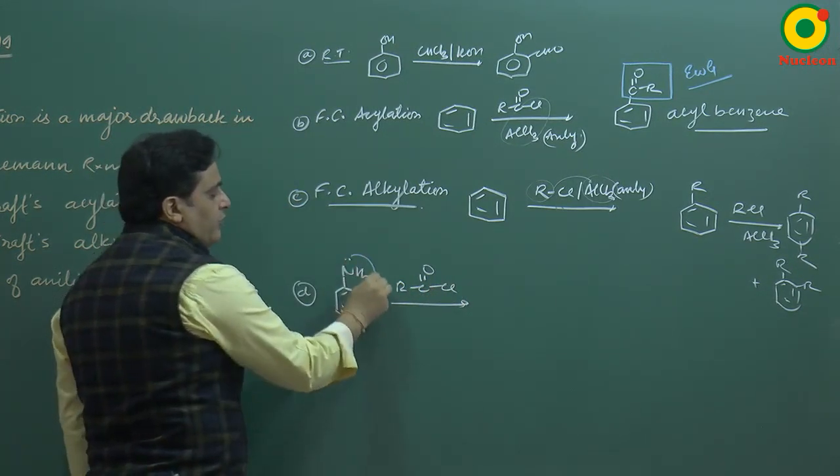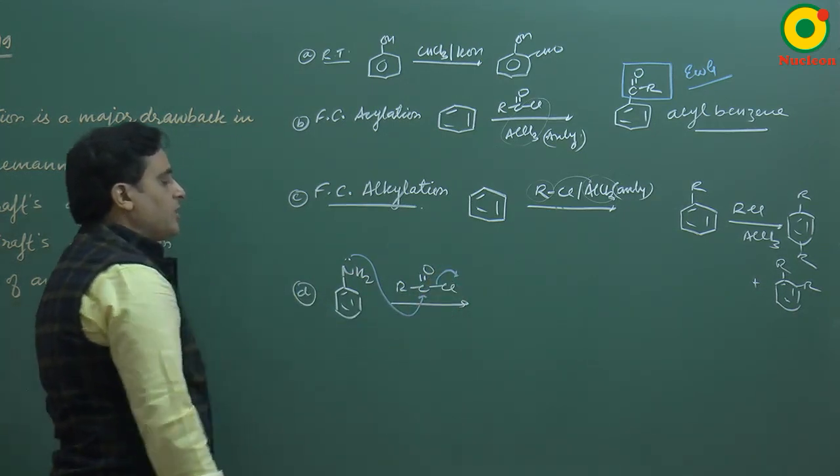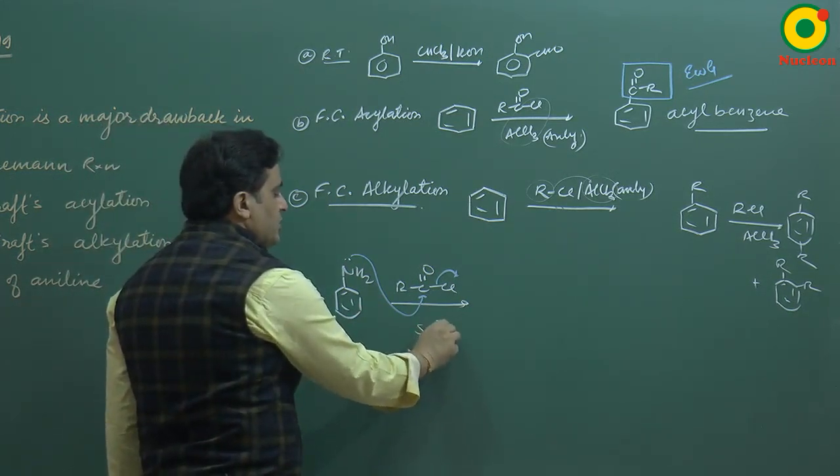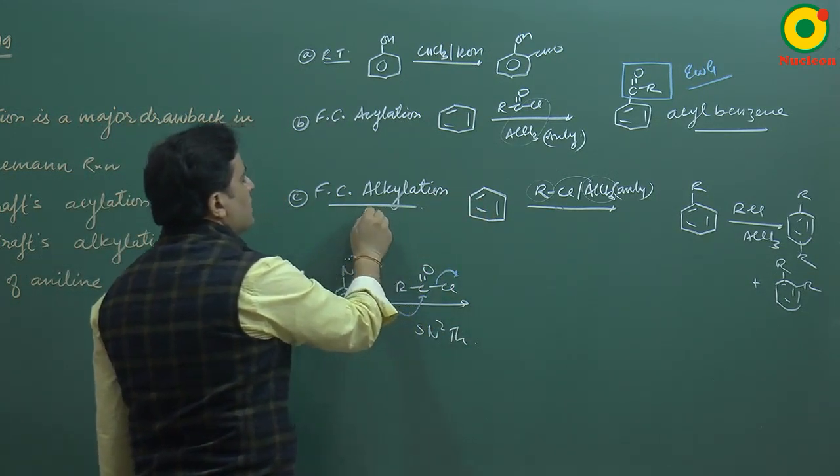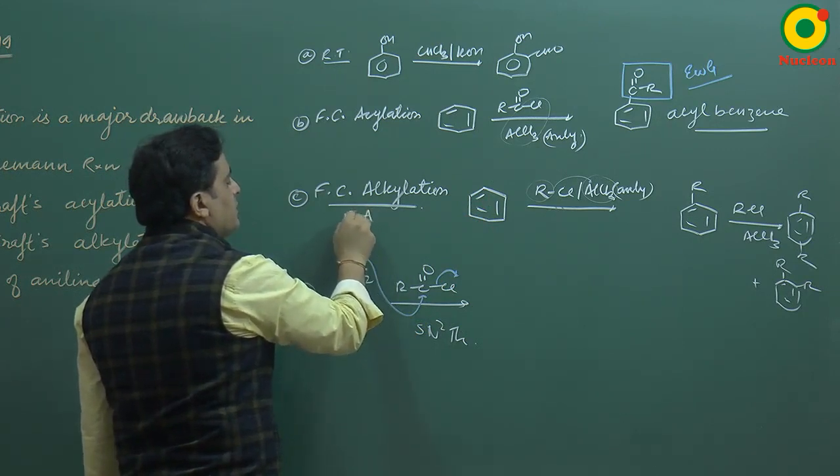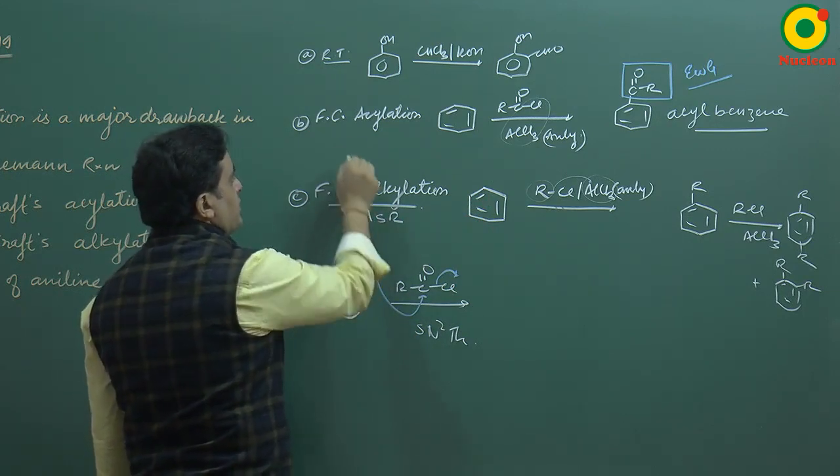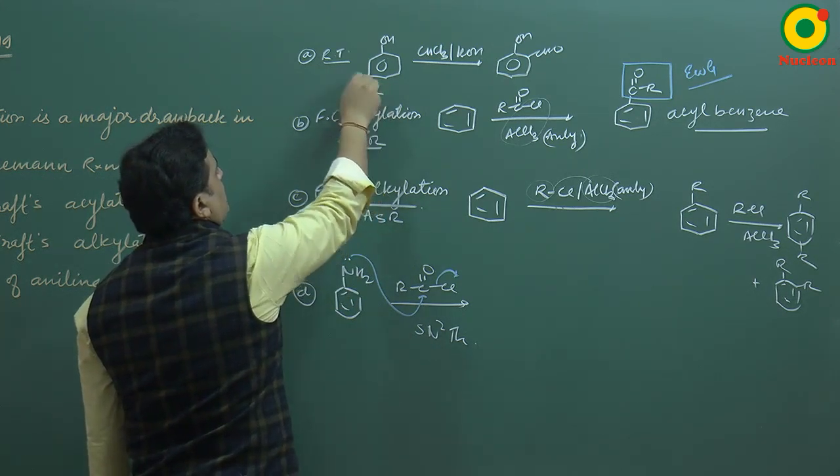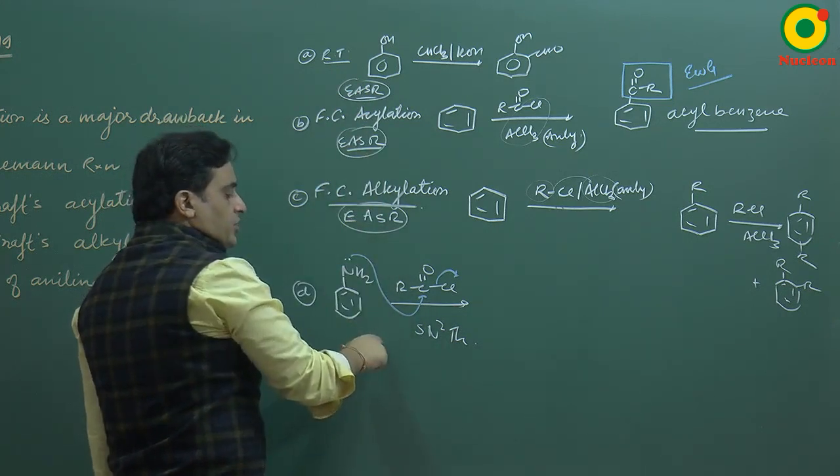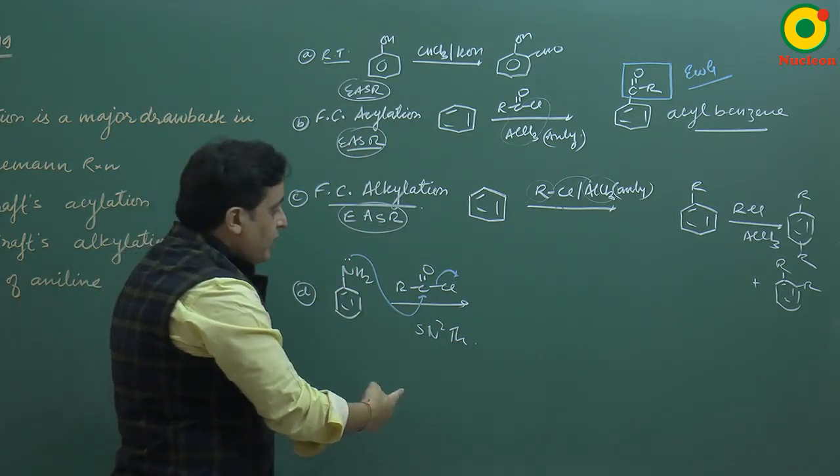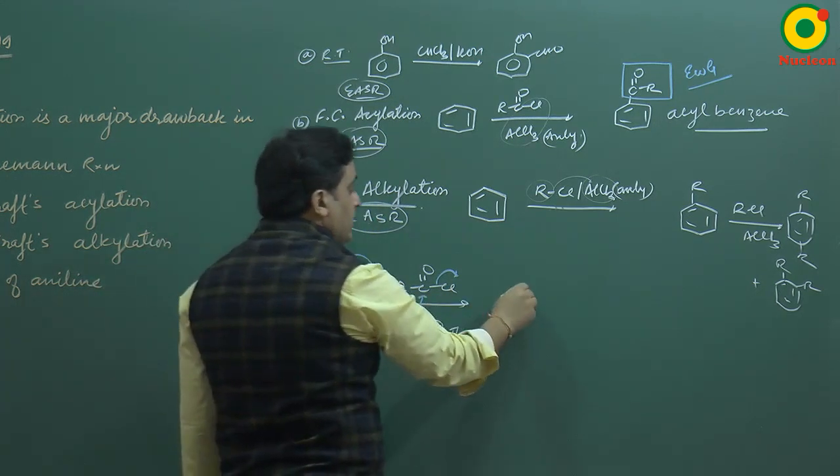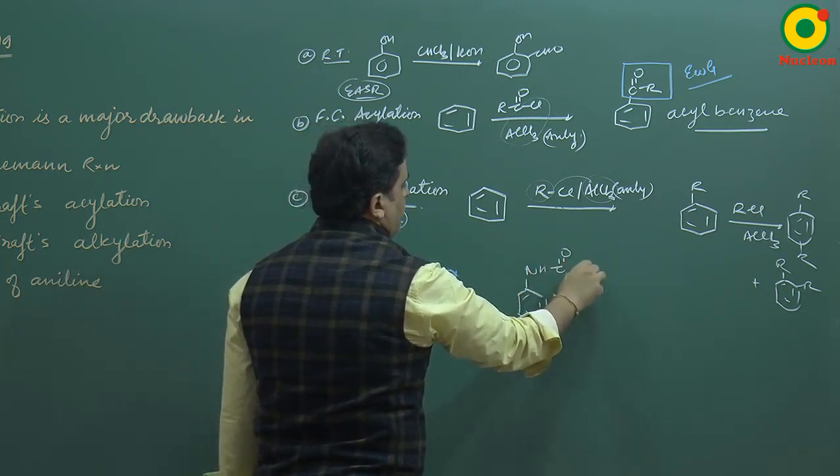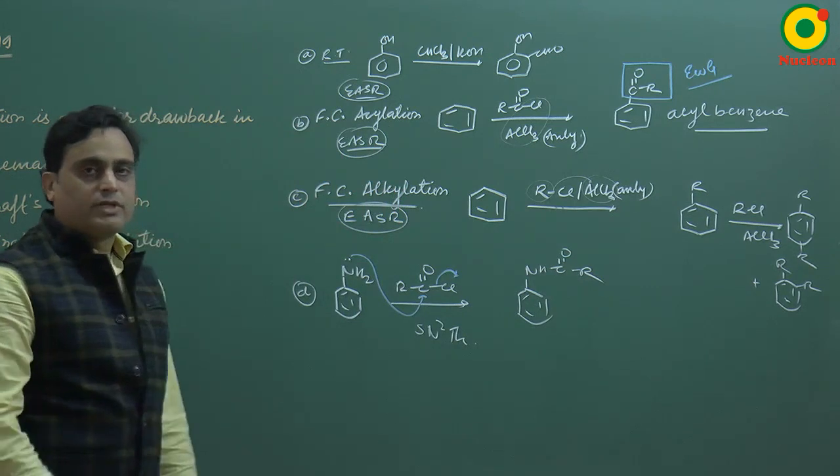Let me explain option D. Aniline as a nucleophile will attack the carbonyl carbon. This reaction is not aromatic substitution. This is SN2-TH. The other reactions are aromatic EASR, electrophilic aromatic substitution reaction. But this reaction is different. Aniline nucleophile attacks the carbonyl carbon, forming N-H-C-O-R. This is acylation of aniline.